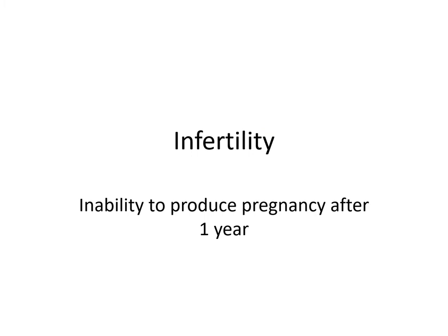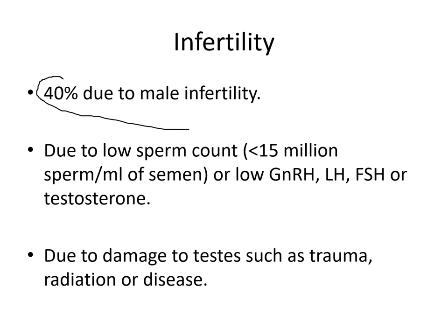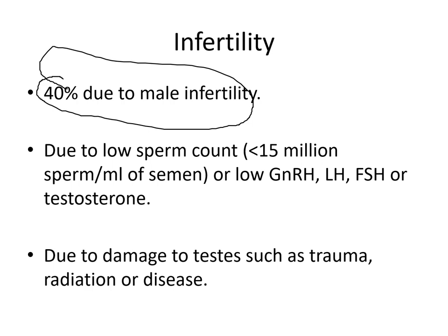Infertility has been classified as an inability to produce pregnancy after one year, and it's estimated that about 40% is due to male infertility. Common reasons are low sperm count — less than 15 million sperm per milliliter of semen — or low hormone levels, including gonadotropin-releasing hormone, luteinizing hormone, follicle stimulating hormone, or testosterone. It could also be due to damage to the testes such as trauma, radiation, or disease. Another disorder is cryptorchidism: during male development, the testes normally descend into the scrotum, but in cryptorchidism they fail to descend, and as a result, no sperm will be produced.